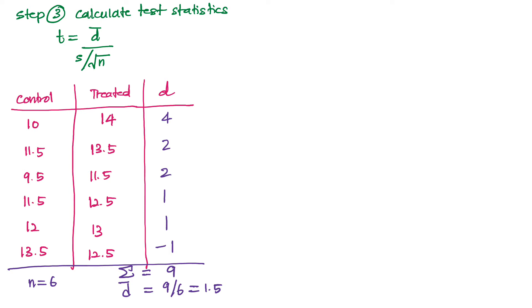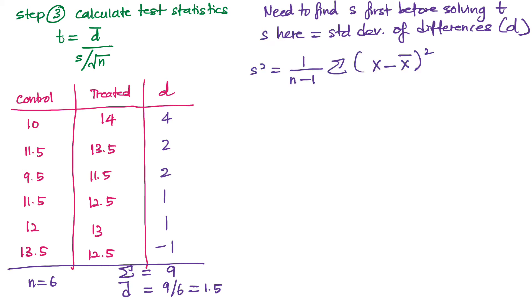So the d-bar is given as 1.5. Next we have to find what is s, so s in this case is defined as the standard deviation of differences.